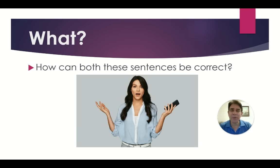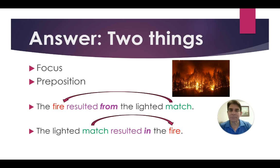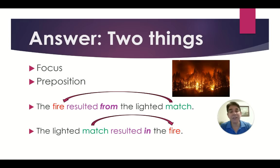How can both of these sentences be correct? Well, the answer involves two things: focus and preposition. Let's look at the examples. The fire resulted from the lighted match — in this case, we're focusing on the fire. The lighted match resulted in the fire — in this case, we're focusing on the lighted match.